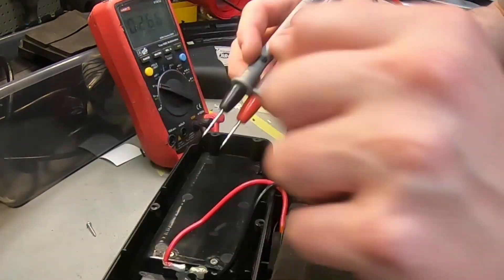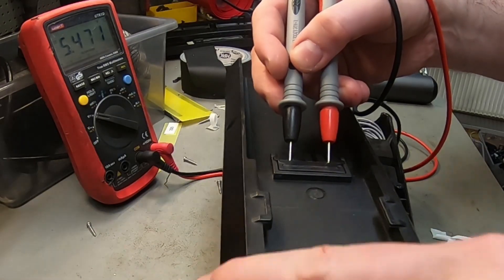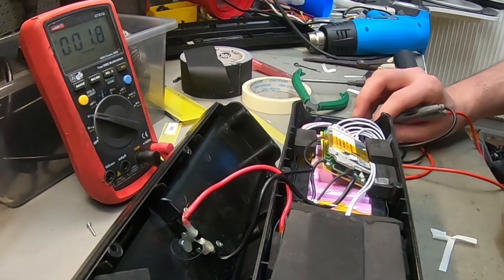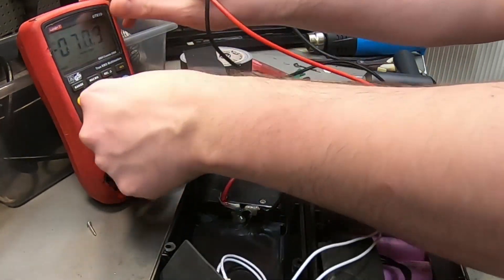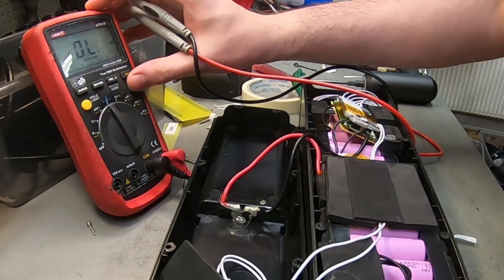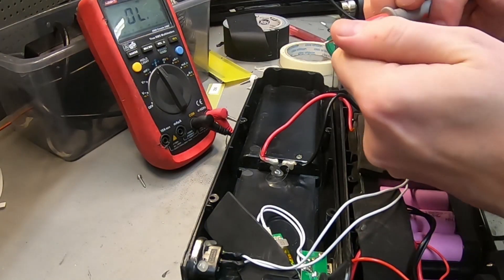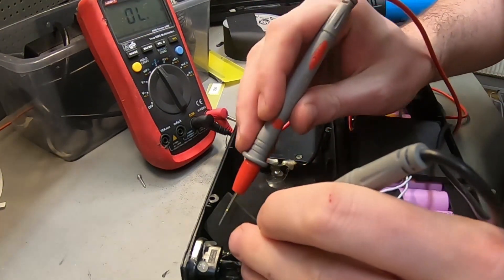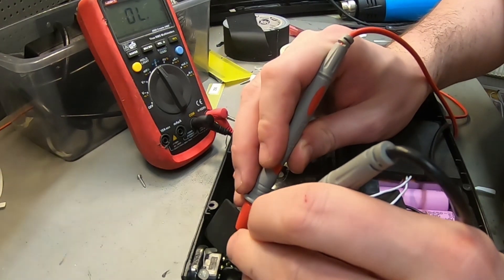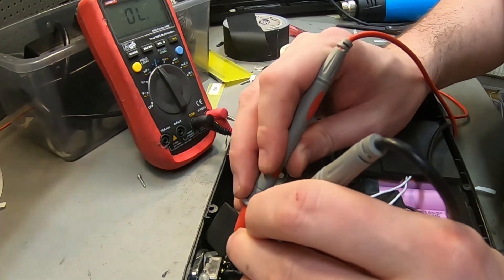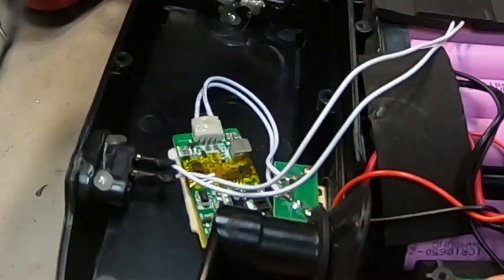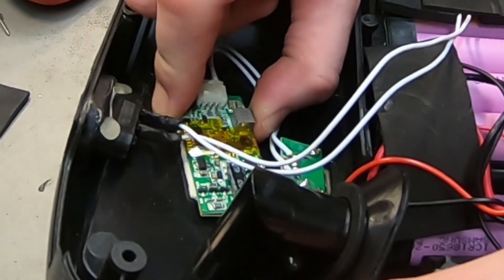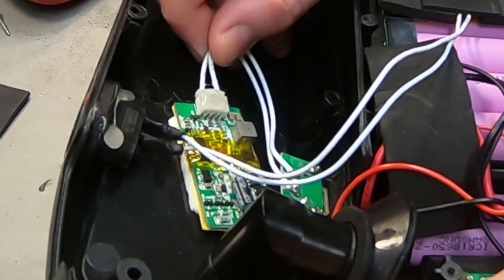Let's measure here in the discharging ports. Still 5.4, so the BMS doesn't like this. Do we have a glitch in the on-off switch? Beep mode. Yeah, it continues when it's in the on position, so then it could also be a defective USB module.